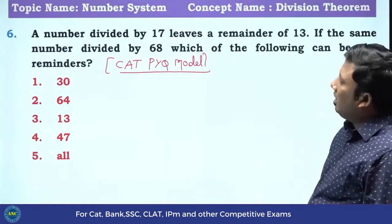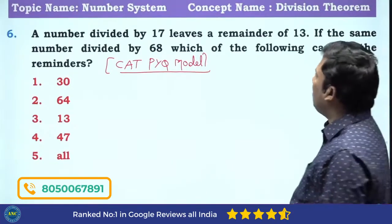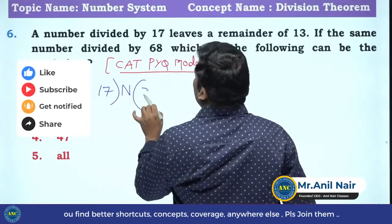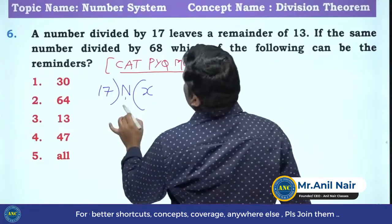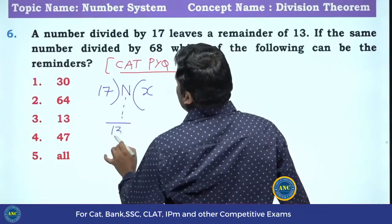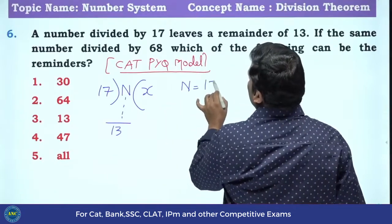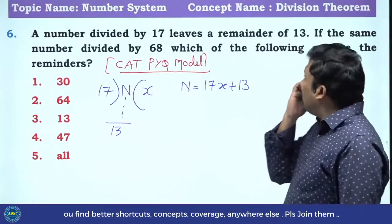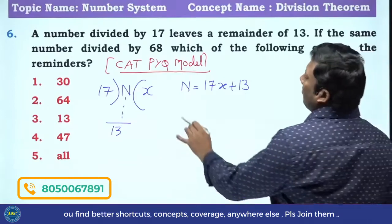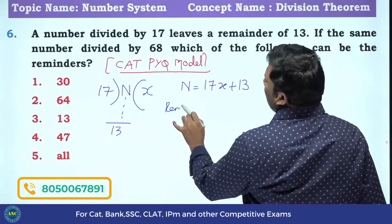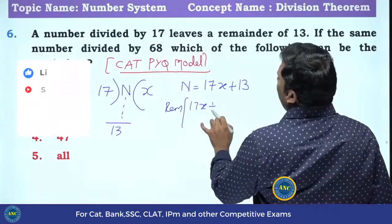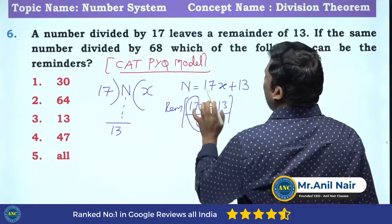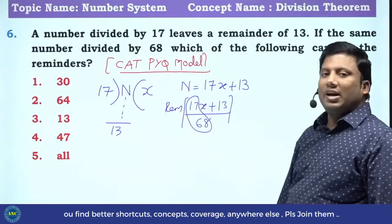A number when divided by 17 leaves a remainder 13. There is a number, it is divided by 17. I do not know the quotient X. It leaves a remainder 13. Dividend equivalent to divisor into quotient plus remainder. If the same number is divided by 68, I hope you understood this question with the previous question. Previous question, it is an easy question where this is perfectly divisible by the denominator. Now it is not perfectly divisible by the denominator.